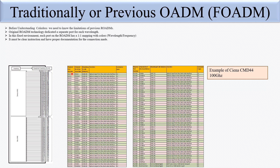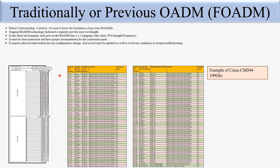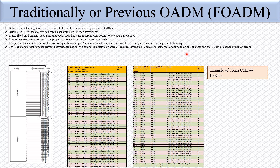In the fixed environment, each port on the ROADM has a one-to-one mapping with the color or wavelength — meaning one port is fixed for one wavelength only. There must be proper documentation for the connection, specifying which port is connected to which transponder and for which wavelength. It requires physical intervention for configuration changes. If you want to change a transponder's wavelength, you must assign a technician, remove the transponder from port one to port three. Physical change requirements prevent network automation, require downtime, operational expenses, time, and introduce human error possibilities.